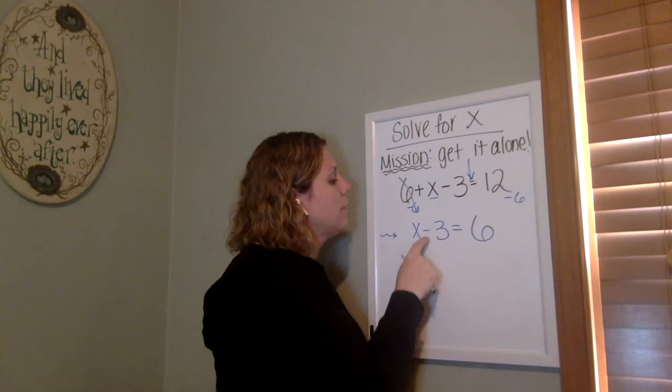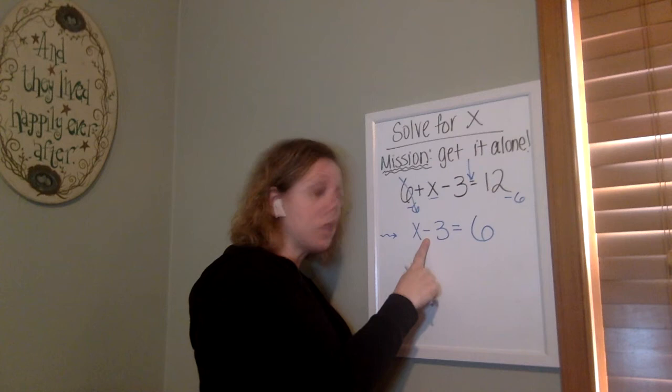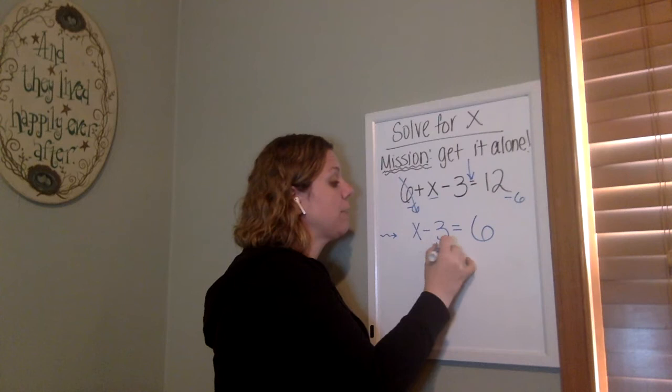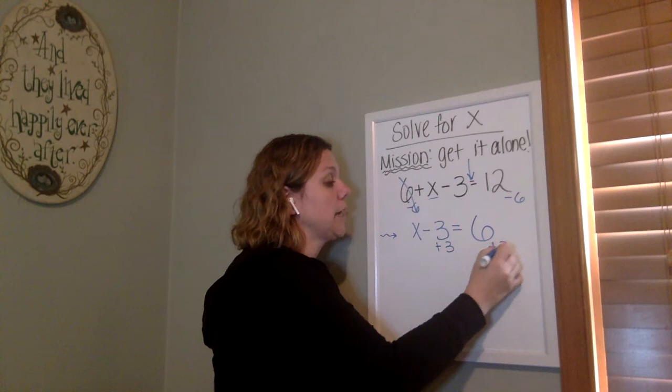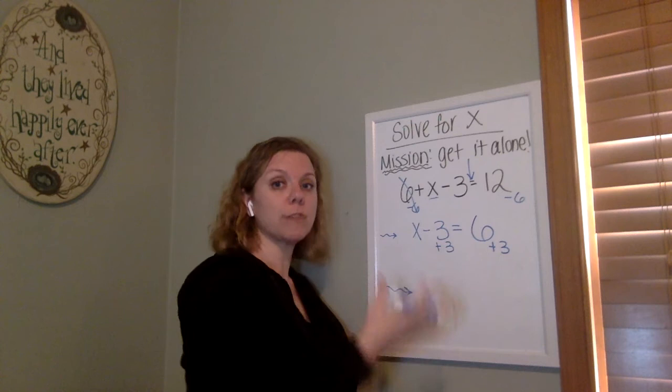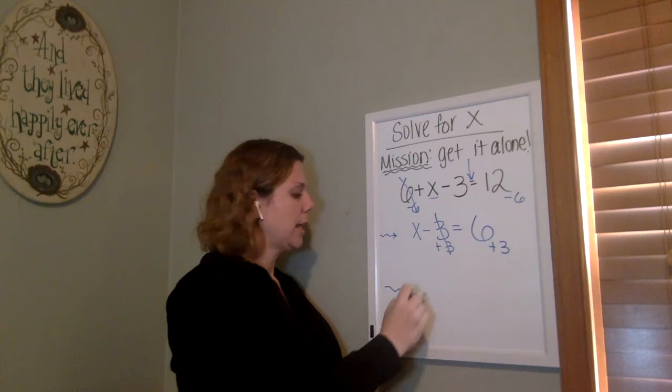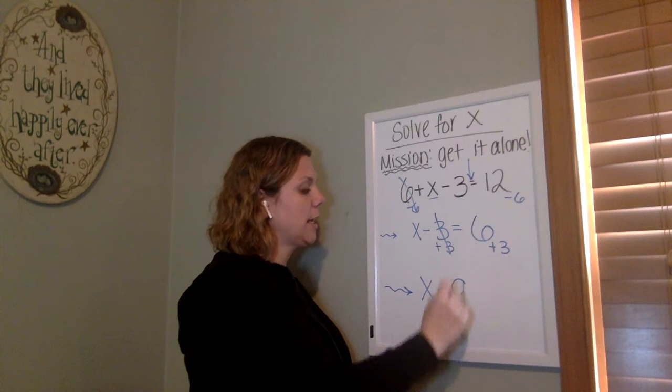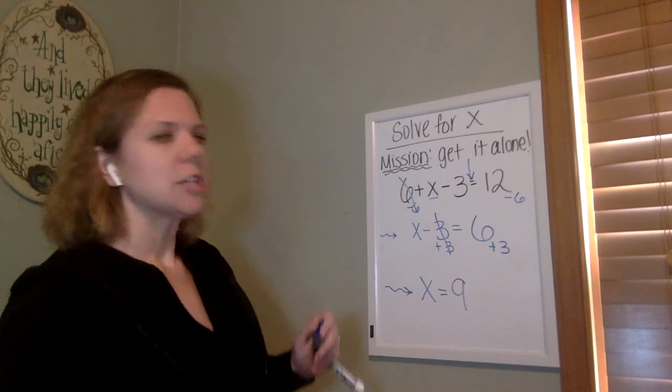So now, if I have minus three, what's the opposite of subtraction? Addition. So right now, three is being taken away. So I want to give three back. And what I do to one side, I also have to do to the other side. And again, so that I don't get confused, I'm going to start a new line here where I kind of rewrite my newly balanced equation. My three and my three went away. And now I have x equals six plus three, nine. And I have my answer.